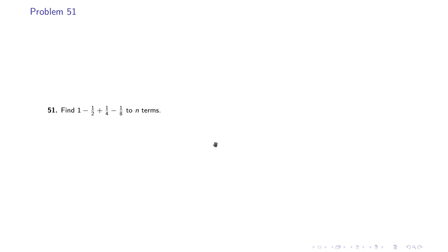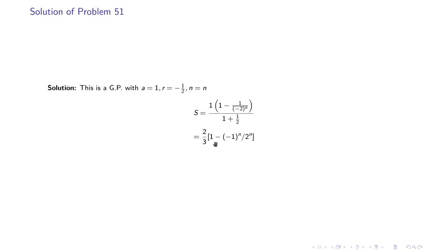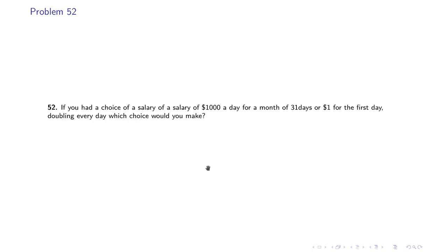Problem 51: Find 1 minus 1/2 plus 1/4 minus 1/8 to n terms. We have solved this kind of question in our previous video as well. Here the common ratio is minus 1/2 and the first term a is 1, number of terms is n. So the result would be 2/3 multiplied with (1 minus (−1/2)^n), divided by 2 to the power n.